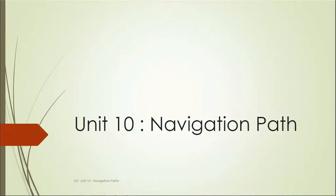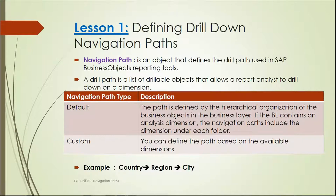In this video we will learn about navigation paths — what they are and how we can use them in universes, and how they are useful for report development. Navigation path is an object that defines the drill path used in SAP Business Objects reporting tools. A drill path is a list of drillable objects that allows the report analyst to drill down on a dimension. Navigation paths are hierarchy-based on parent-child relationships and can be used to drill down in Web Intelligence reports.